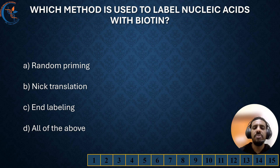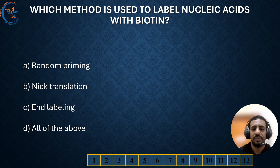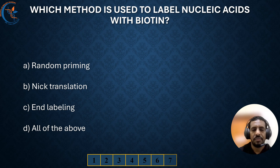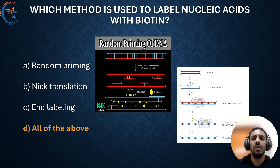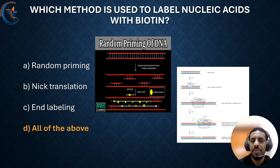Which method is used to label nucleic acid with biotin? The correct answer is all of the above. Biotin can be incorporated into nucleic acids using various methods including random priming, nick translation, and end labeling.